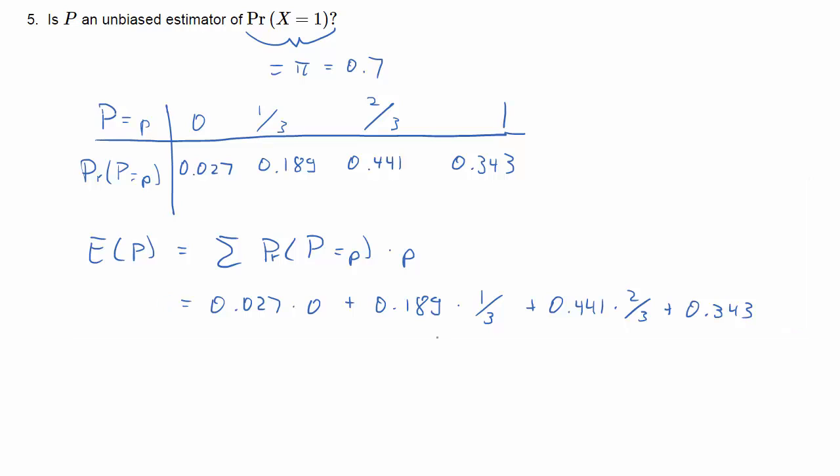We'll do that for all outcomes, and indeed, we get a result of 0.7, which means that the proportion of 1s in the sample is indeed an unbiased estimator of the success probability or the probability of having a 1 in an individual draw.